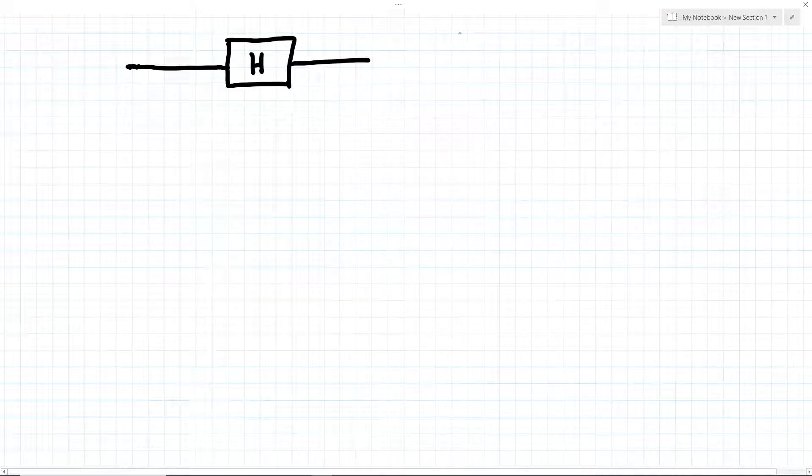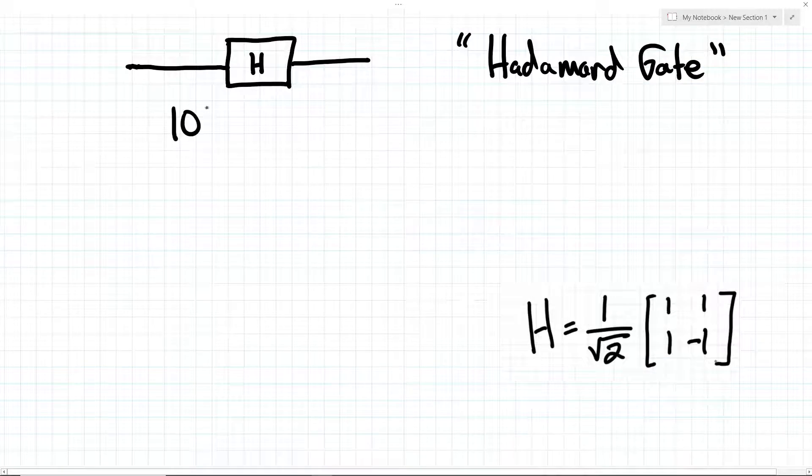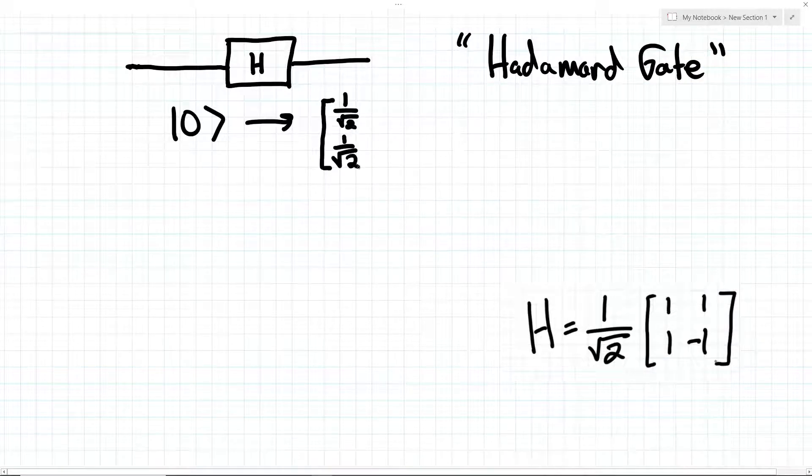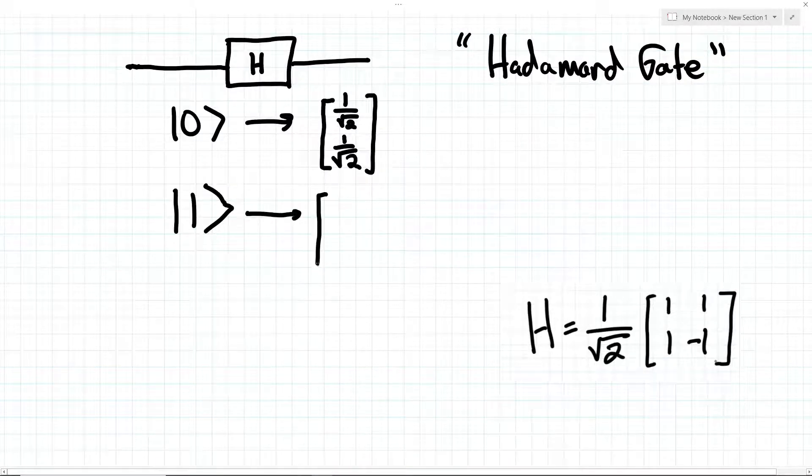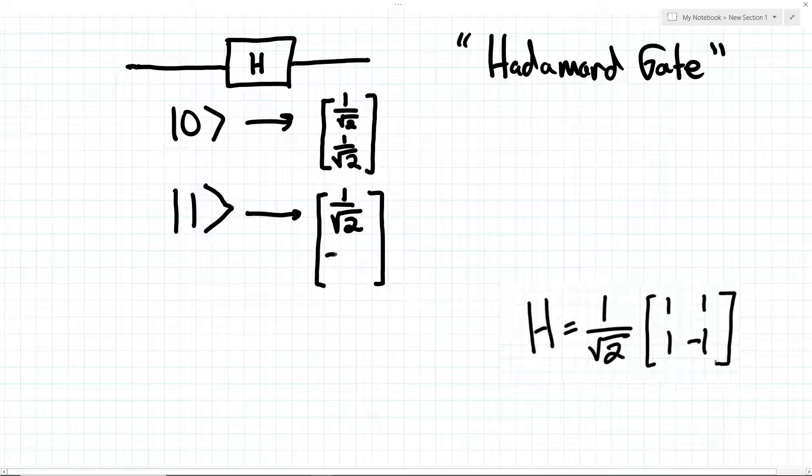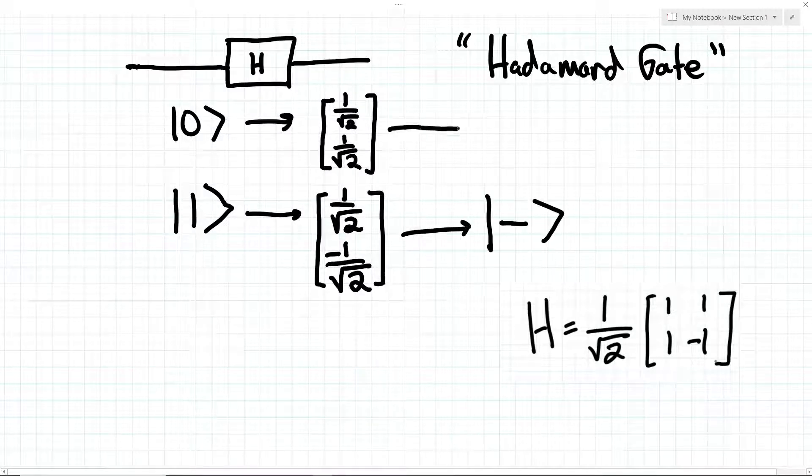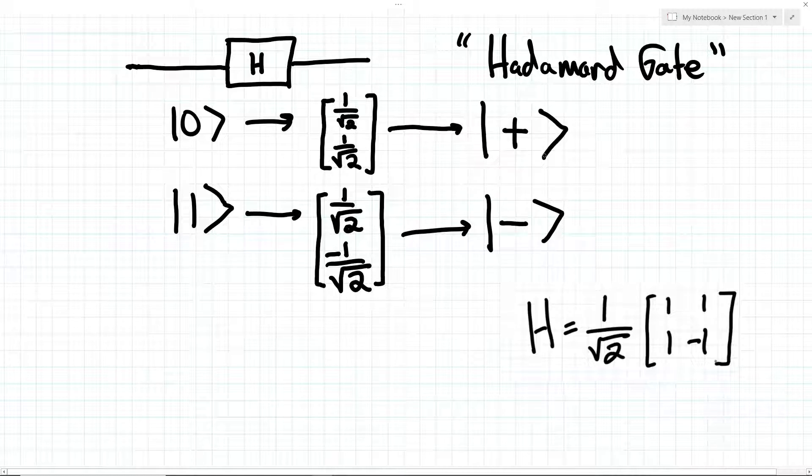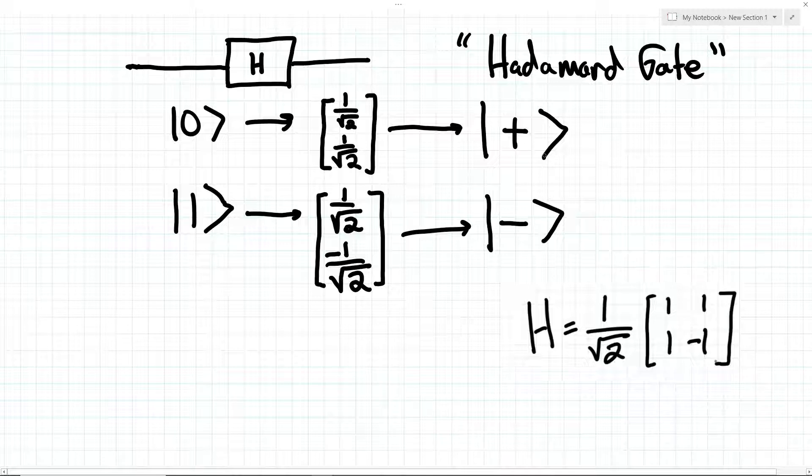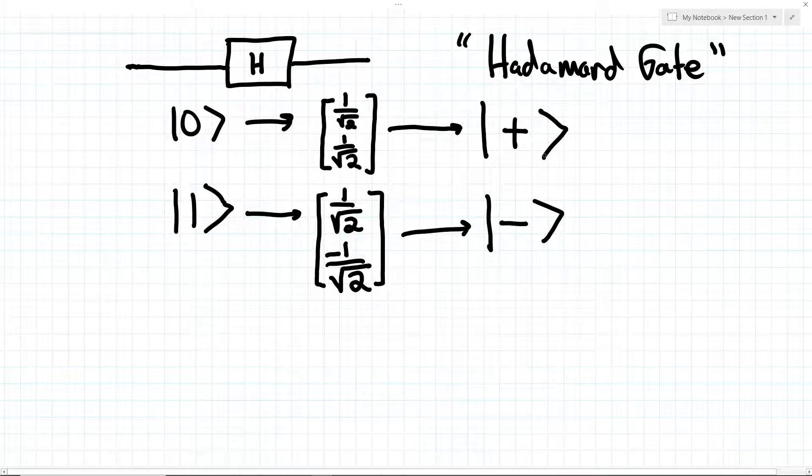The next gate, the H gate, or the Hadamard gate, is a bit more interesting. The matrix representing it looks like this. The gate transforms the zero and one states into these two states. Notice how both of these new states will measure to zero and one with a 50% chance. These two states are very important in quantum computing. They are called the minus and the plus state. When measuring these states, the result of measurement will both be distributed the same. The only difference between the minus and the plus state is a minus sign.